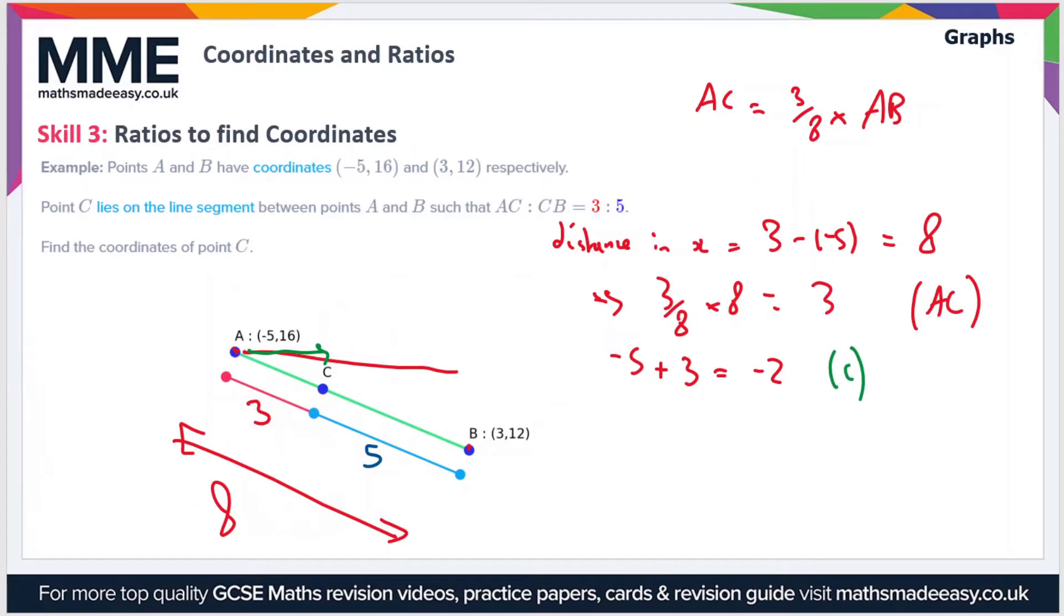Now we have to do the same thing for the y-values. If we look at the change in y going from A to B, we have y-values of 12 and 16. The distance in y is 12 minus 16, which is -4. Now we have to multiply this distance by three-eighths.